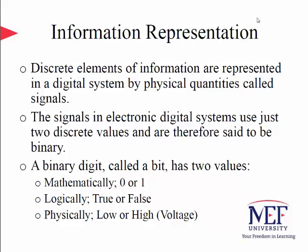Digital systems deal with discrete quantities of information. They either emerge from the nature of the data being discrete and processed, or maybe quantized from a continuous process. The discrete information, from whatever source it comes from, is represented by what are called signals. The signals in most present-day electronic digital systems use just two discrete values, and therefore they are called binary. A binary digit, called a bit, has two values: zero and one.